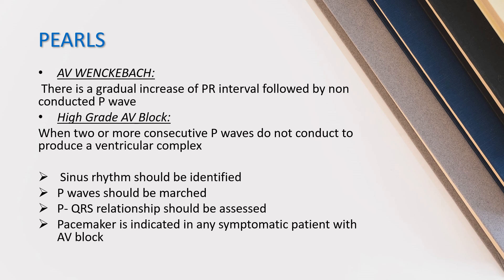Take-home points from this ECG: Identify Wenckebach — a gradual increase of the PR interval followed by a non-conducted P wave. Identify high-grade AV block — when two or more consecutive sinus P waves do not conduct to produce a QRS complex. Always identify sinus rhythm first; never jump directly to QRS complexes in bradyarrhythmias — always look at sinus node activity. P waves should be marched to see whether they are regular or irregular. P-to-QRS relationship should be identified to determine the type of AV block. Pacemaker is indicated in any symptomatic patient with AV block.